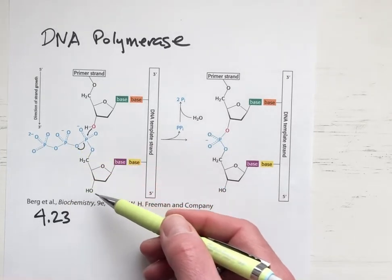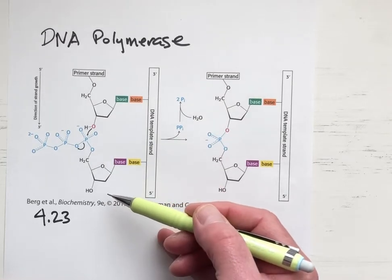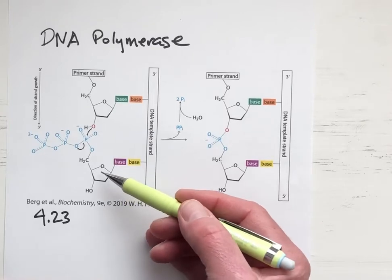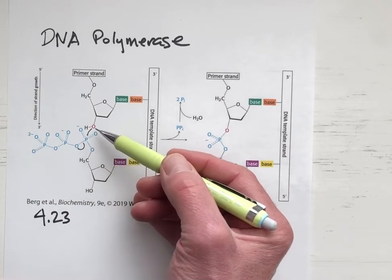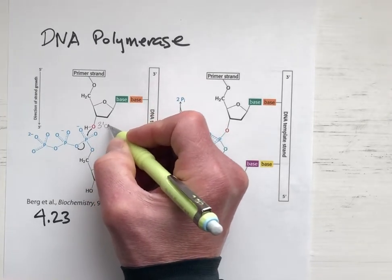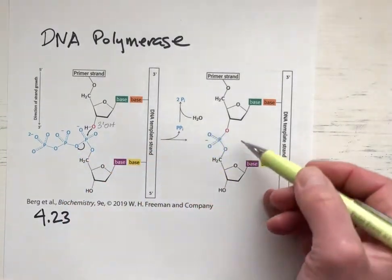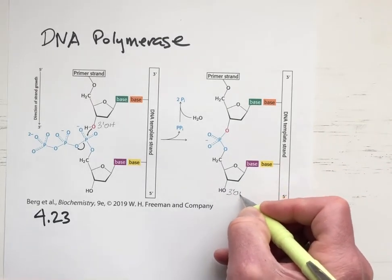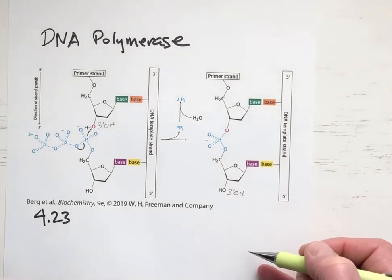The activated monomer needed to make the primer strand longer by one unit is the deoxynucleotide triphosphate. There are three phosphate groups, and it's the alpha phosphate that comes under attack by the primer strand's 3' hydroxyl. The pyrophosphate is the leaving group. We've made the primer strand longer by one unit, and we now have a new 3' hydroxyl group that will serve as the nucleophile in the next cycle of the reaction.